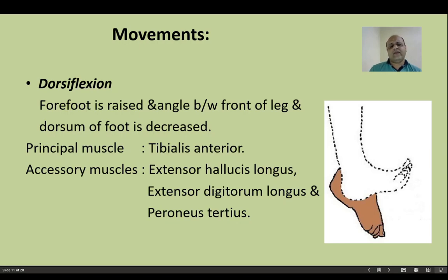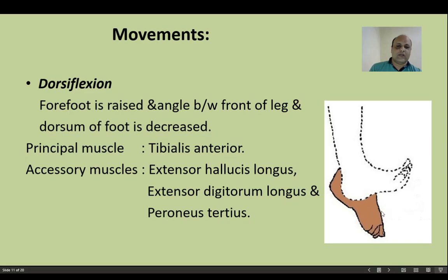Movements of the ankle joint are very important from the examination point of view. In dorsiflexion, the forefoot is raised — the angle between the front of the leg and the dorsum of the foot decreases. The main muscle for dorsiflexion is tibialis anterior, the thick muscle of the anterior compartment, and all remaining muscles of the anterior compartment are accessory muscles for dorsiflexion.